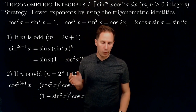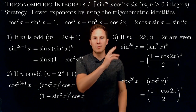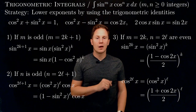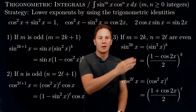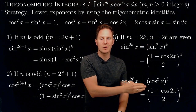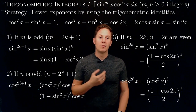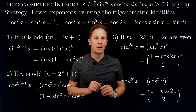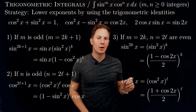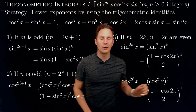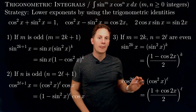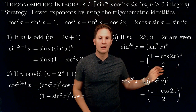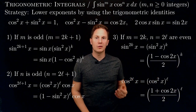Now if both exponents are even, so m is of the form 2k and n is of the form 2l with some integers k and l, then these even powers of sine and cosine are written as sin squared to the k and cos squared to the l. Sin squared and cos squared can be written in terms of cos(2x): sin squared x equals (1 minus cos(2x)) over 2, and cos squared x equals (1 plus cos(2x)) over 2. This reduces the exponent 2k to k and 2l to l, halving the exponents.